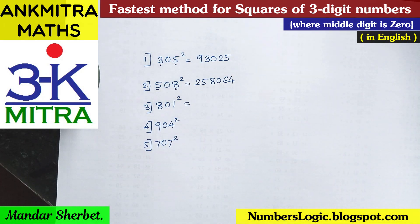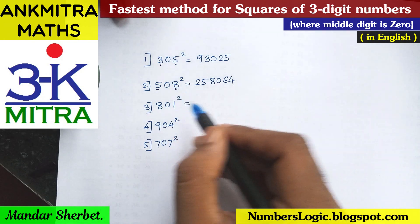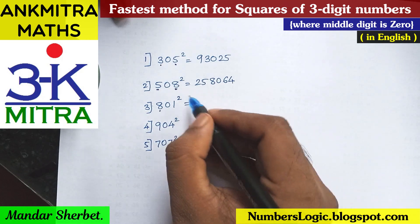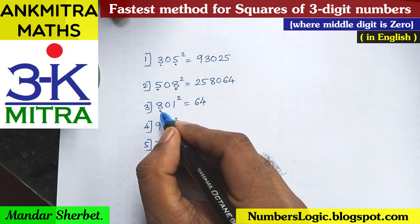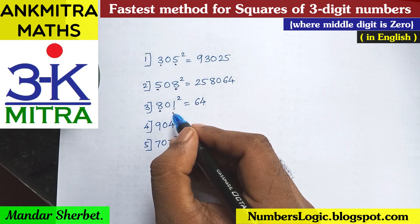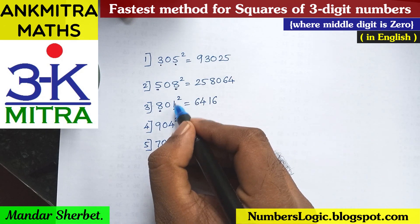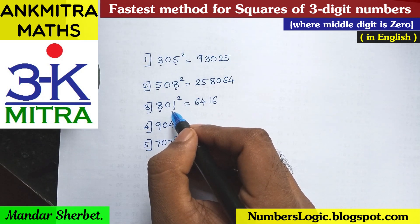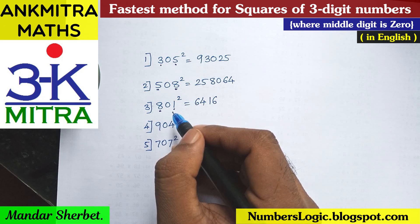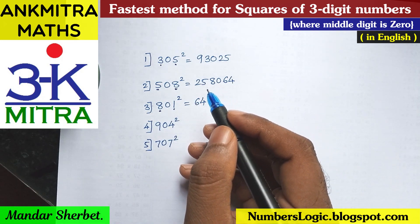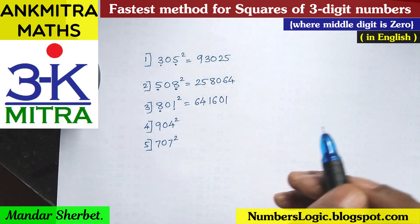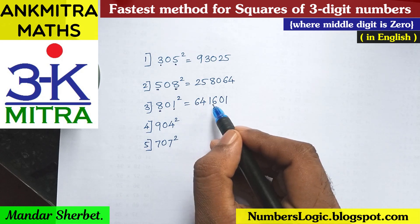For 801 squared, there is a slight point to be careful about at the end. The same method applies but with a small change at the final step. Square of the leftmost digit 8 is 64. Then the product of end digits: 8 times 1 is 8, doubled is 16. For the final step, the square of the units digit 1 is 1 — but since it's a single digit, we need to make it two digits by writing 01 instead of just 1. So 801 squared is 641601.